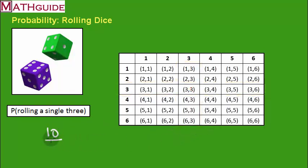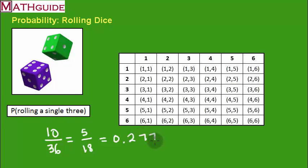There are 36 total outcomes. So the probability is 10 over 36, which is a great answer, but we can write this as a reduced fraction. Dividing top and bottom by two gives five eighteenths. That can also be written as a decimal — the calculator gives 0.277 repeating sevens — or rounded to a percent: approximately 27.8%. So we have our answer written in a variety of ways.